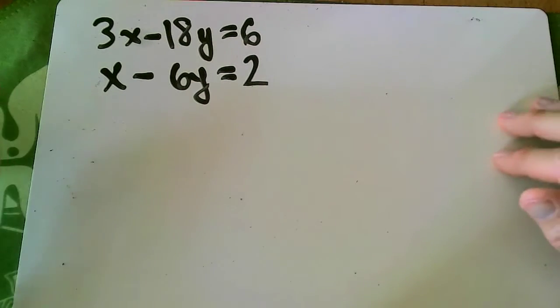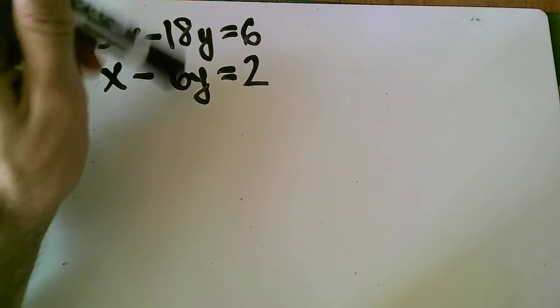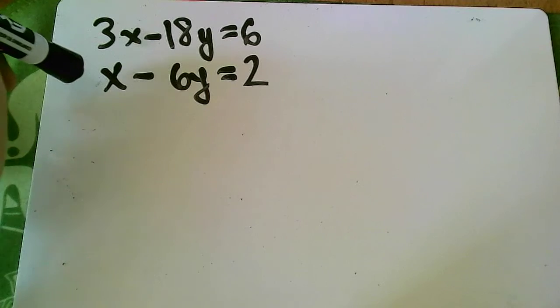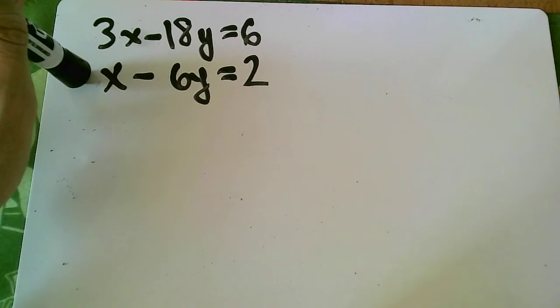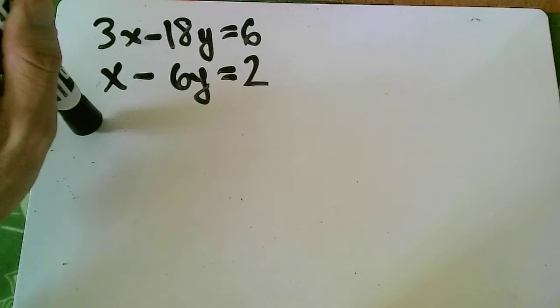So remember when I talked about the addition method before, what you need to do is be able to eliminate x or y. Right now if I add down, it won't eliminate anything. However, if I multiply the bottom by a negative 3, that will give me 3 minus 3, and the x's will go away.